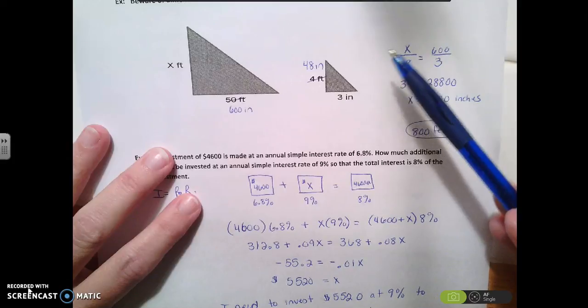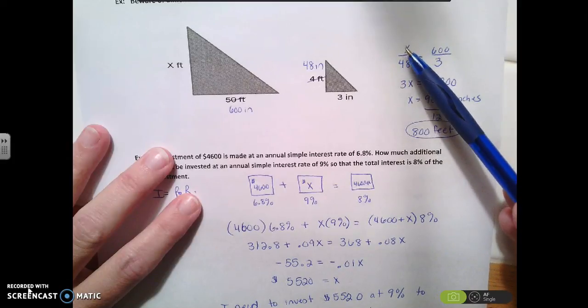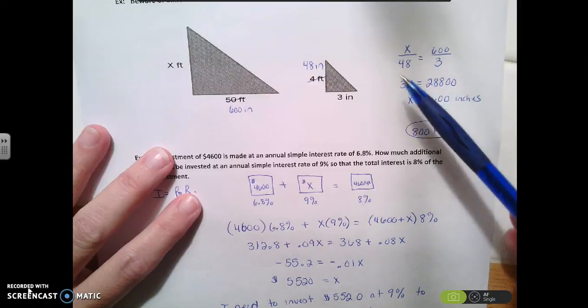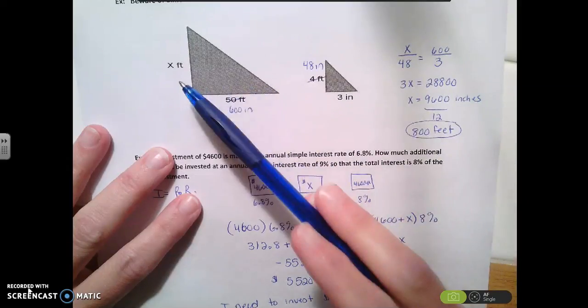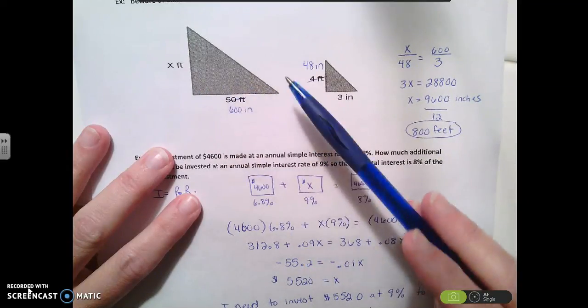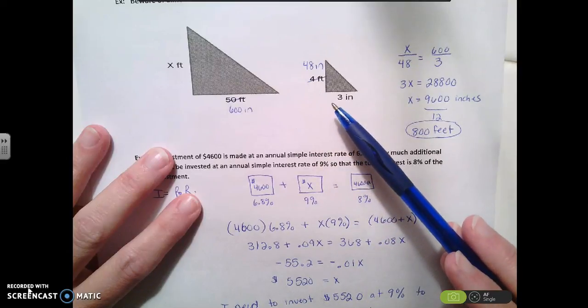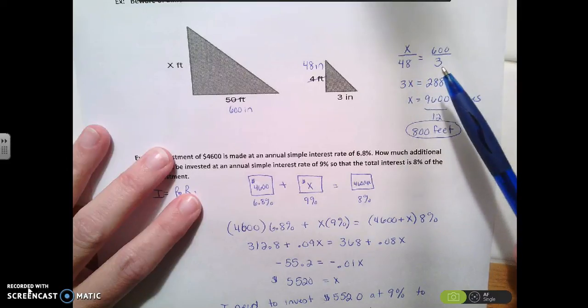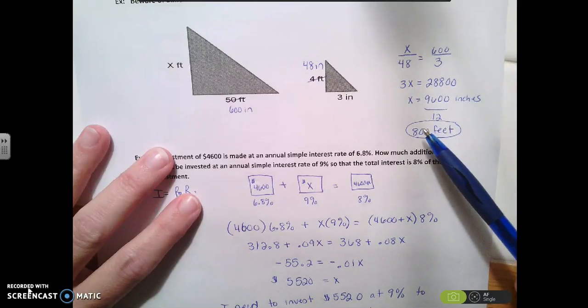And then I set up my proportions. Now this is what I did. I did x over 48 and 600 over 3. You could have done x over 600 and 48 over 3, and they all would have worked the same way. And then we're going to cross multiply, and we end up with 800 feet.